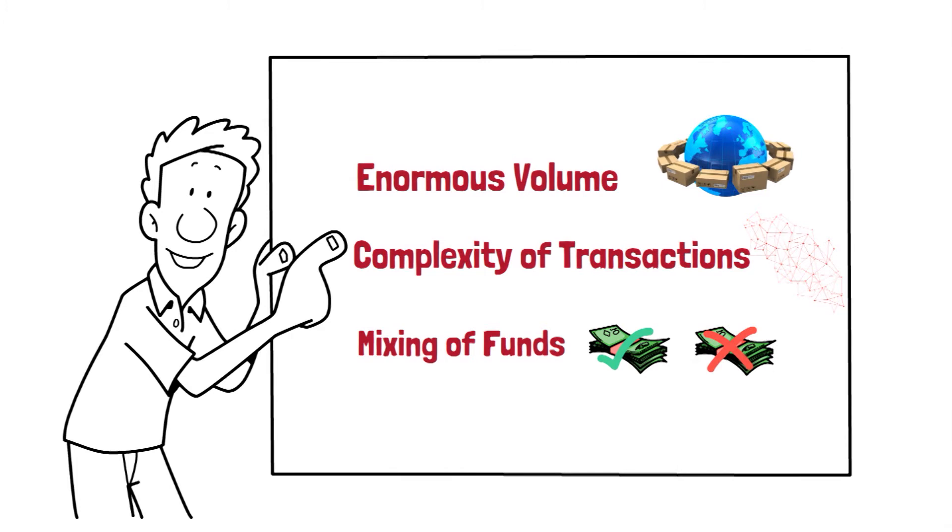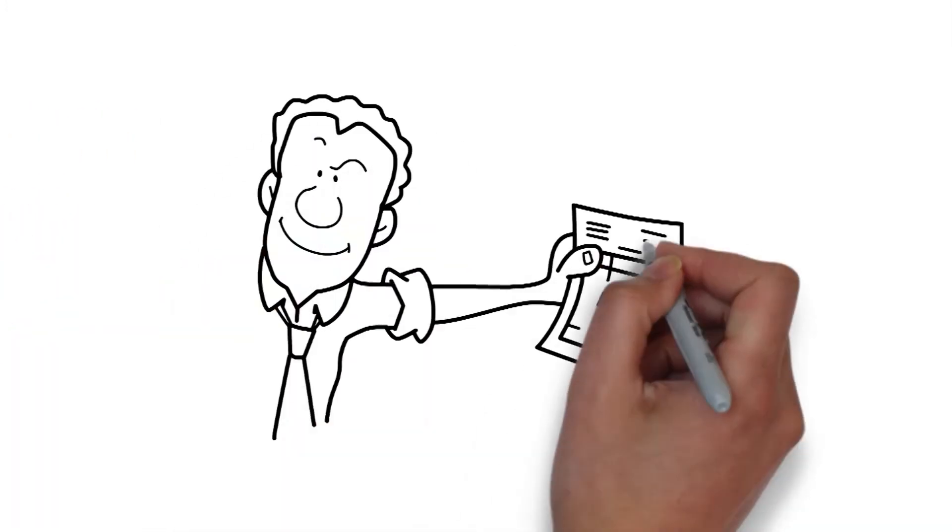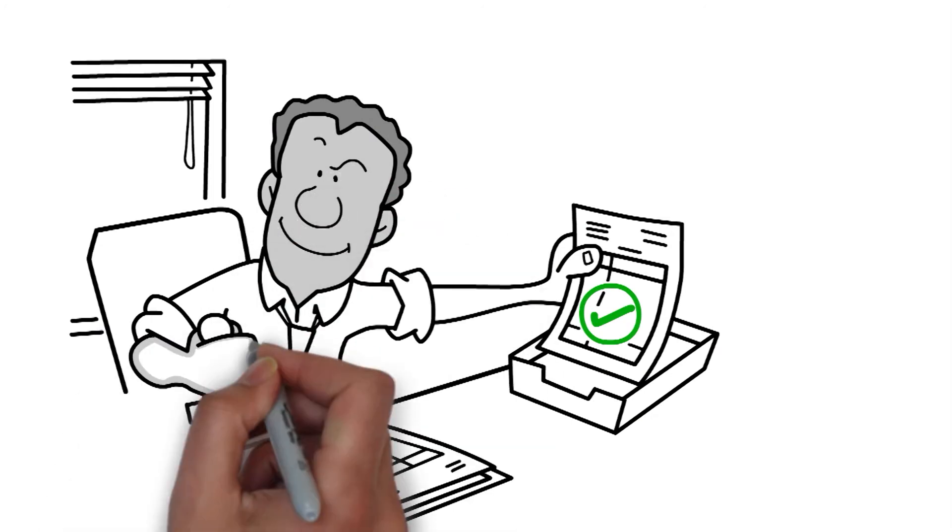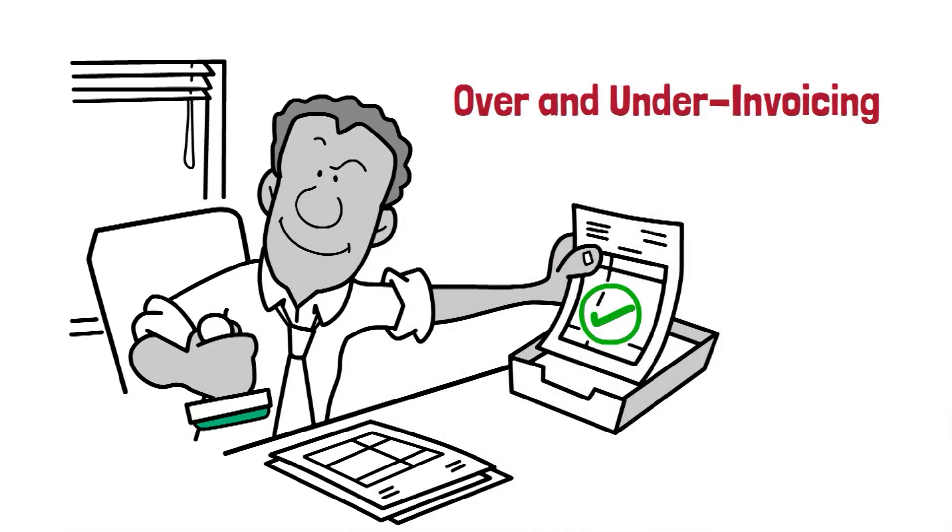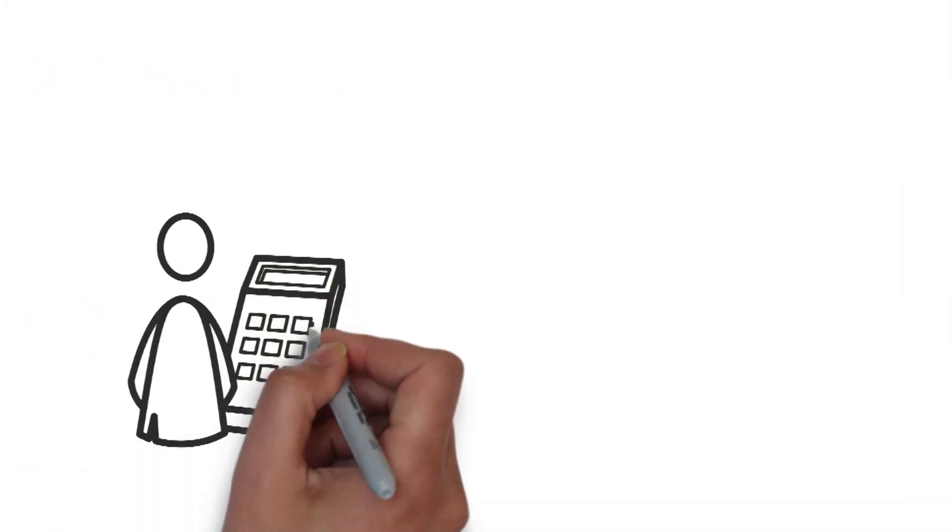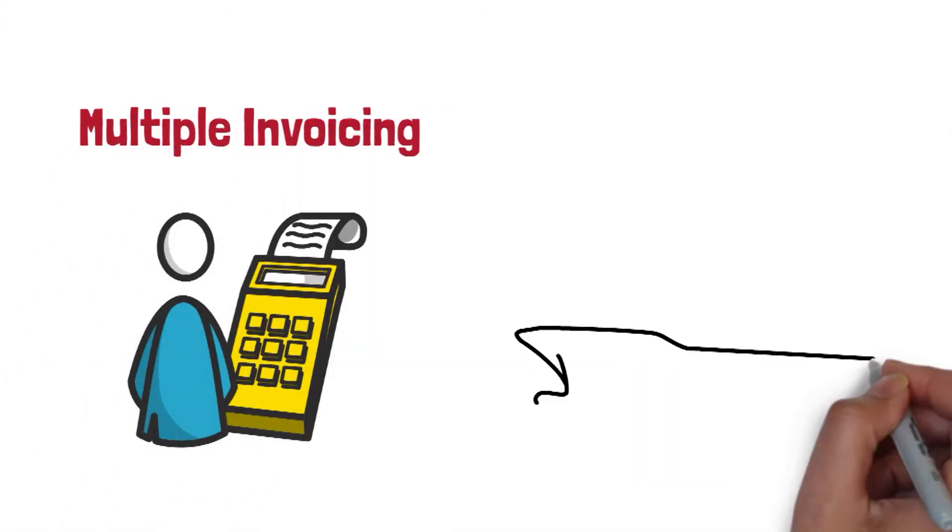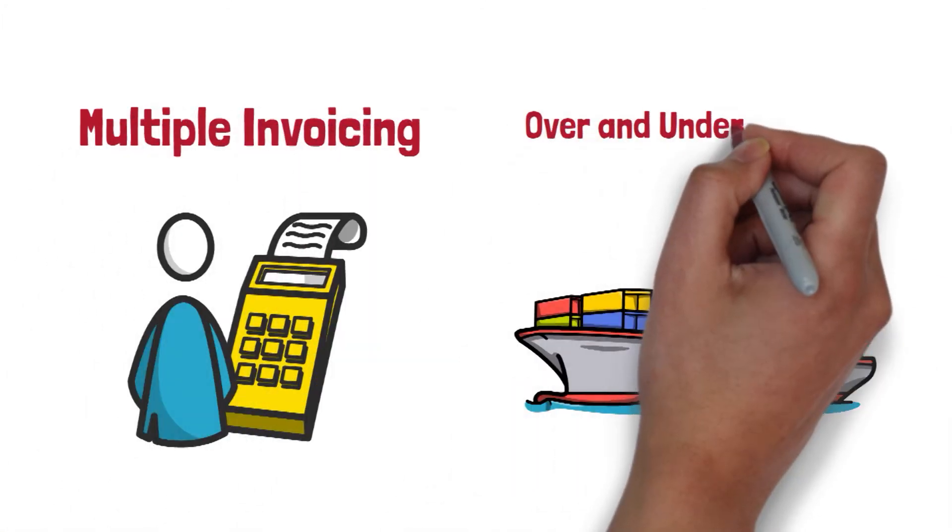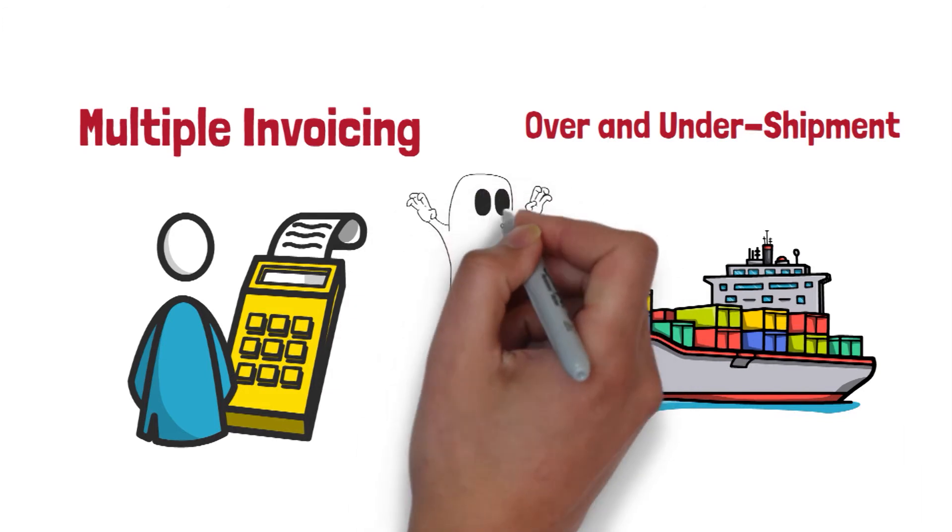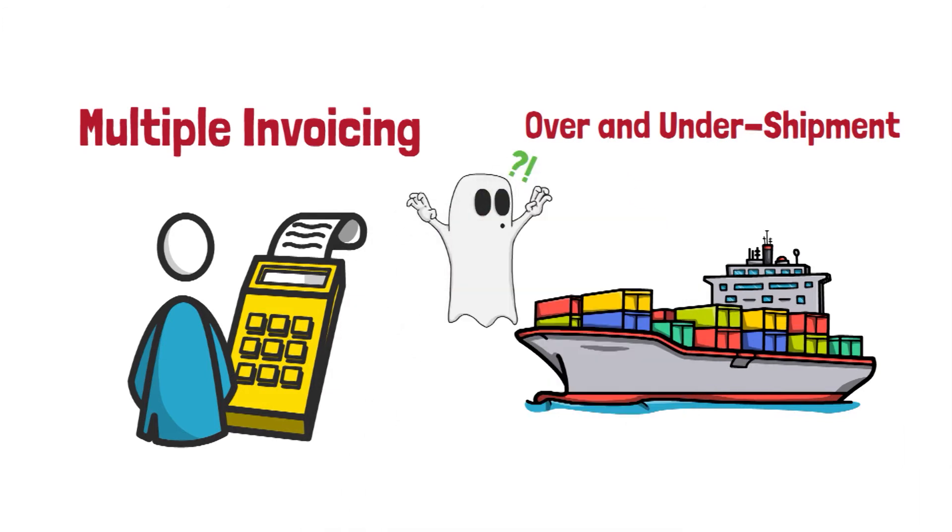The most common techniques of trade-based money laundering are over and under invoicing of goods and services, multiple invoicing of goods and services, over and under shipment of goods, including phantom shipments, where no product is moved at all.